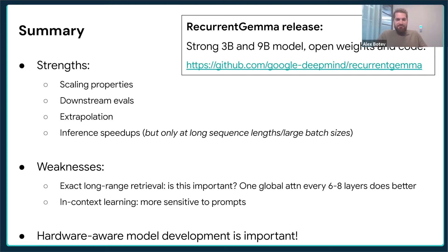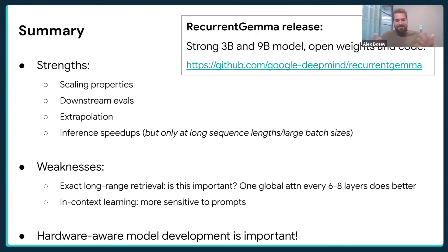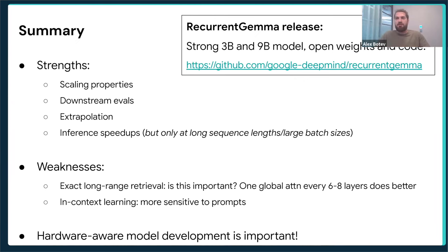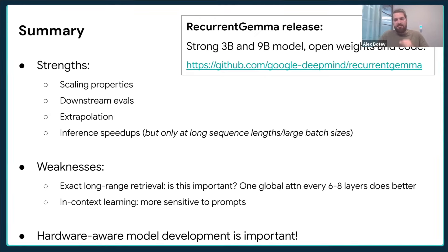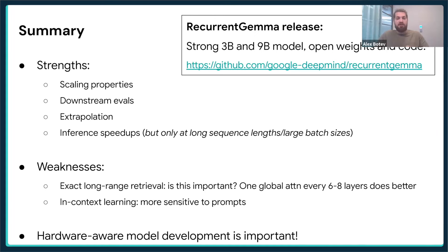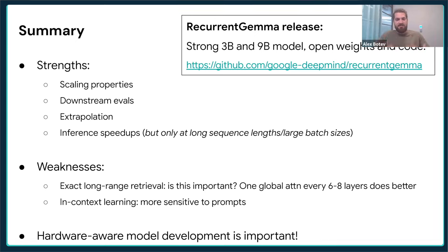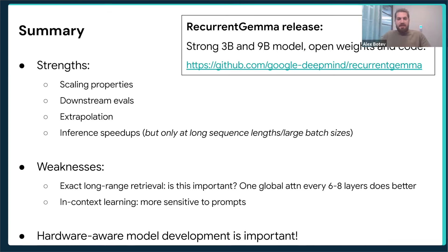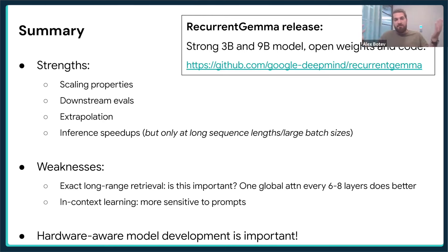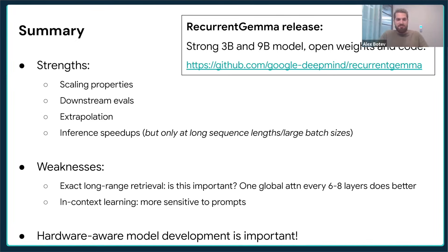To summarize: SSMs are performing on par with transformers on pure language performance. They scale well and work at scale. They have very good extrapolation capabilities and are usually faster at inference time. The main weaknesses are that for needle-in-the-haystack retrieval they aren't as good as transformers, and for in-context learning they're more sensitive to how you prompt them. We have open-sourced the recurrent Gemma model — based on the Griffin architecture for both 3B and 9B — available under Google's Gemma umbrella of models.